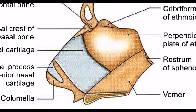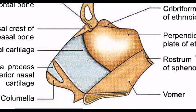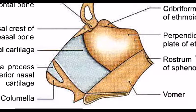We have to add the nasal septum, which separates the nasal cavity into two halves. It has a mucus membrane cover, bony parts, and cartilaginous parts. The bony parts include the ethmoid bone, which has two plates: the perpendicular plate and the cribriform plate. The perpendicular plate of the ethmoid forms the nasal septum.